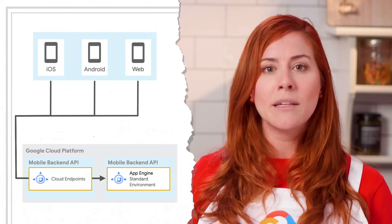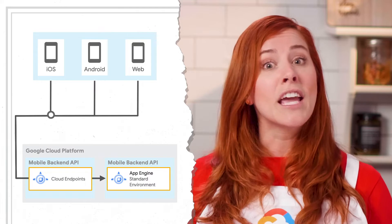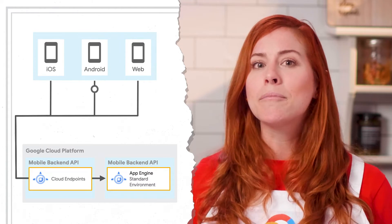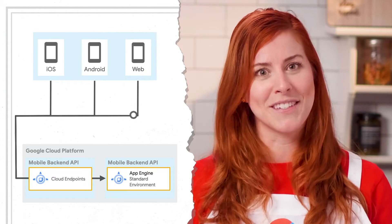I know that Endpoints Framework for the App Engine Standard environment generates APIs, client libraries, and discovery documentation for an App Engine app. Exactly. This means you don't have to write wrappers to handle communication with App Engine. And with the client libraries generated by Endpoints, you can make direct API calls from your mobile app. Using Endpoints with App Engine gives you an app platform that monitors, updates, and scales the hosting environment.